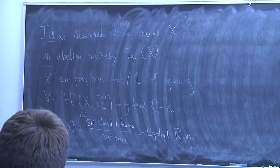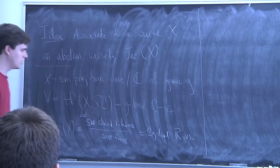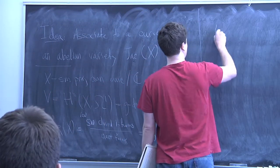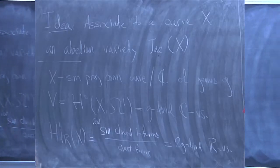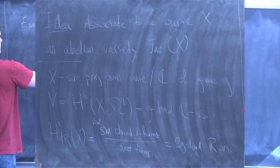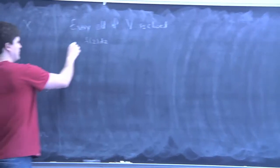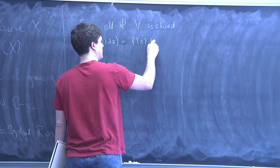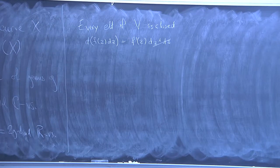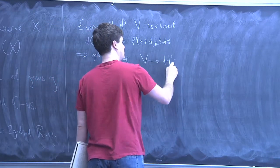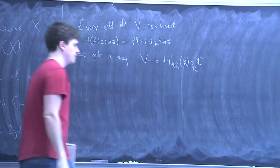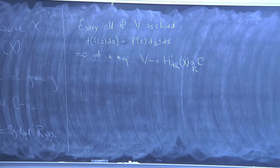I want to do some things relating V and the cohomology — basically the Hodge theory of curves. First of all, every element in V is a closed form. That's because locally things in V look like f(z)dz, where z is a local parameter on the curve. If you take d of this, you get f′(z) dz ∧ dz, and dz ∧ dz is zero. So since everything in V is closed, we can regard it as an element of de Rham cohomology tensored up to ℂ. This means we get a map from V to the de Rham cohomology tensored with ℂ, and the first thing I want to say is that this map is injective.